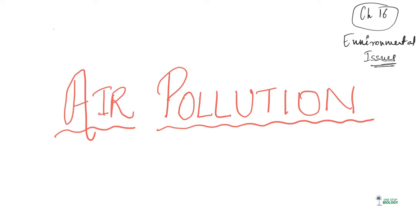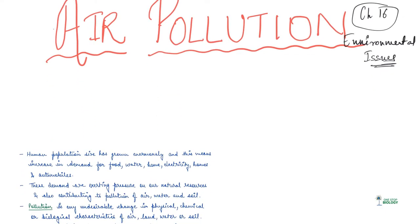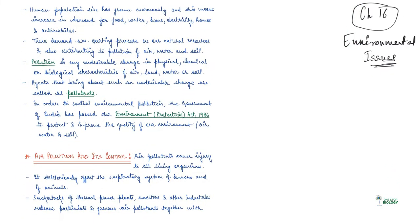We have till now understood that the human population size has grown enormously over the last hundreds of years. So this basically means increasing demand for food, water, home, electricity, and a lot of commodities. This demand is exerting tremendous amount of pressure on our natural resources and is also contributing to pollution.